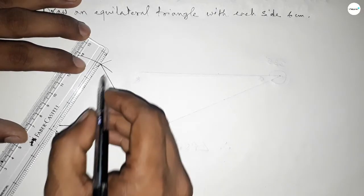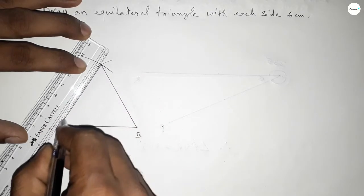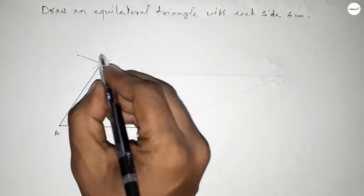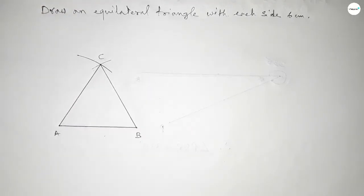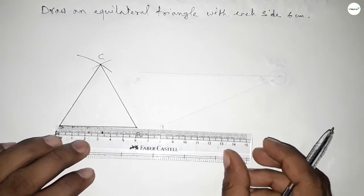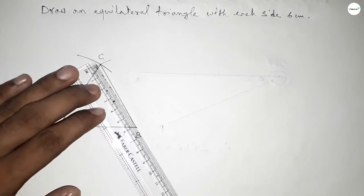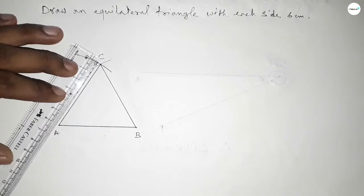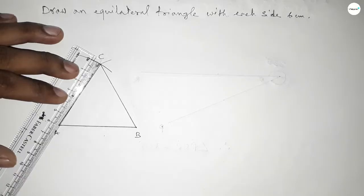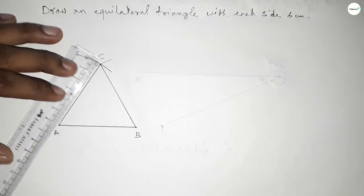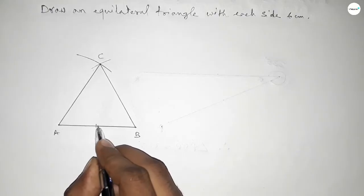Now joining this side and joining this side to get an equilateral triangle with each side 6 centimeters. This intersection point is C. Now checking all the sides.